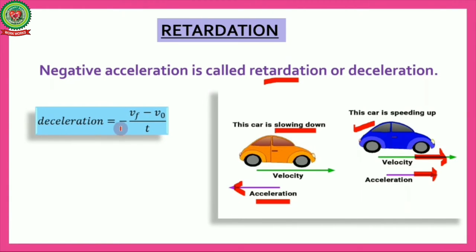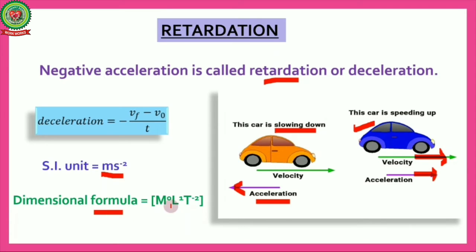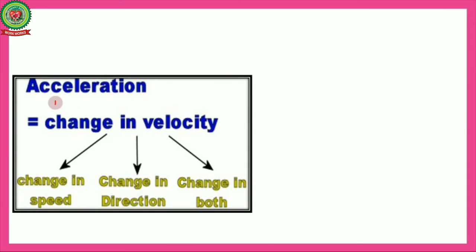The formula for retardation is: retardation = -(vf - v₀) / t, where vf is the final velocity, v₀ is the initial velocity, and t is the time. Since retardation is negative acceleration, its unit is the same — meter per second square — and its dimensional formula is also the same: M⁰L¹T⁻².